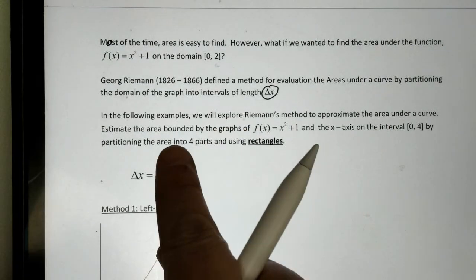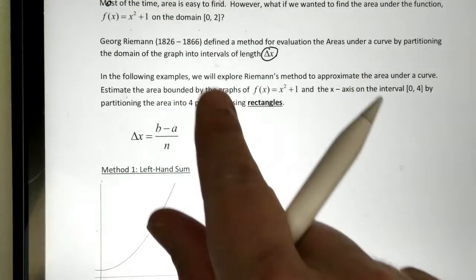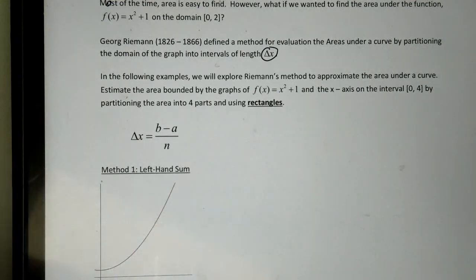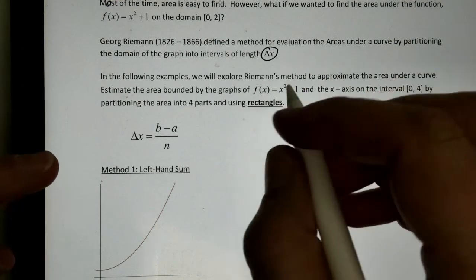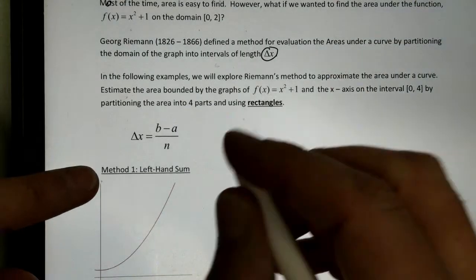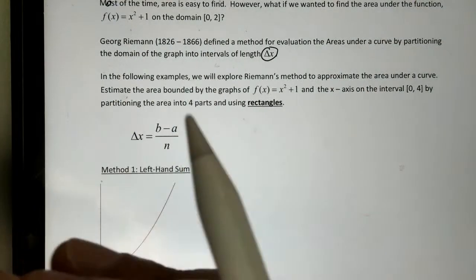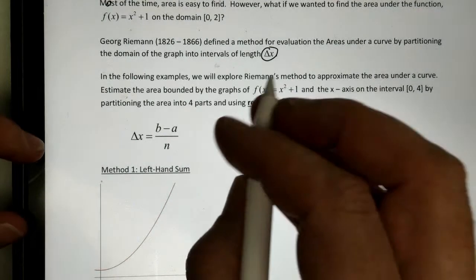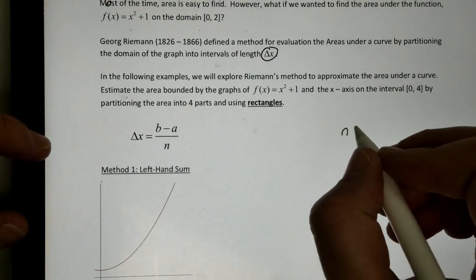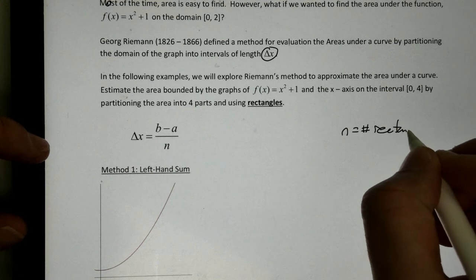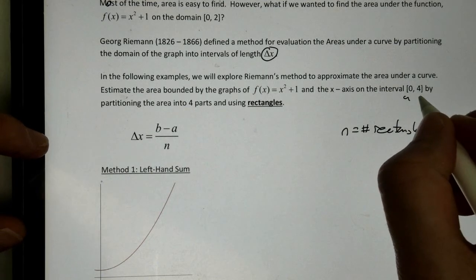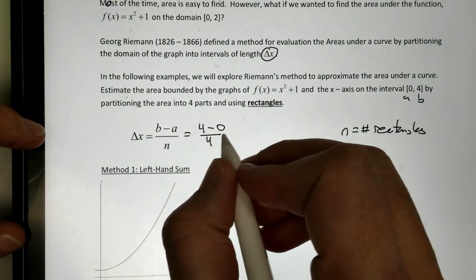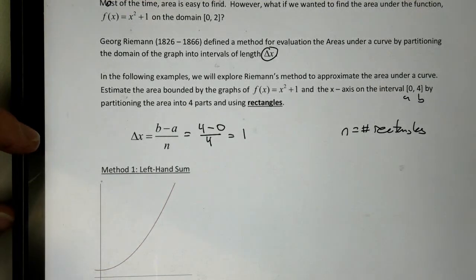We want to estimate the area under the curve, the parabola x squared plus 1, on the domain 0 to 4, by partitioning it into four equal parts using rectangles. So, the first thing we're going to do is, how do we get delta x? So, to do that, we're going to use this formula, b minus a over n, where n is the number of rectangles for us. a is where I start, b is where I end. So, this is going to become 4 minus 0 over 4, which is just going to be 1 for us.